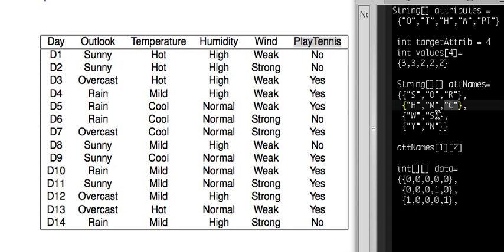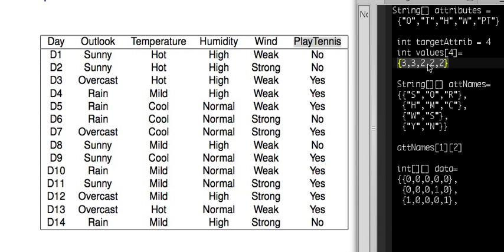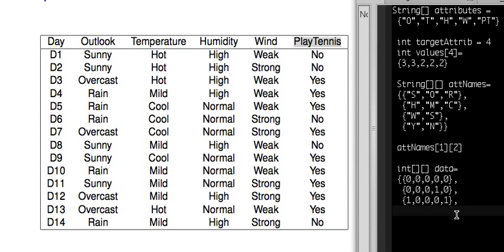The idea is that with these basic arrays you can store your data as numbers and work only with numbers. Since you know how many values are in each category, you know values range from zero to one less than that count, making it much easier to compare, add, and compute.